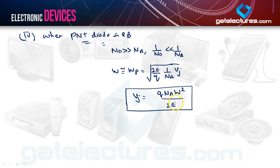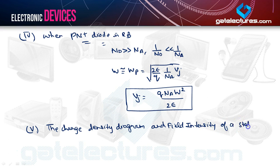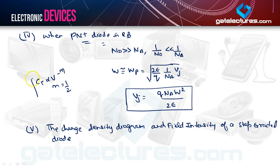Let's move on to the charge density diagram and electric field intensity of a step graded diode. Note that CT is proportional to V to the power minus N, where N = 1/2 for the abrupt junction case.